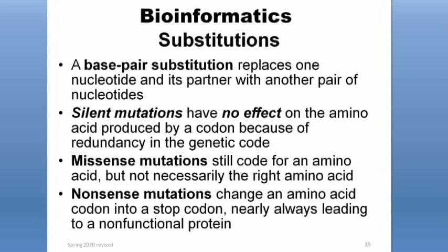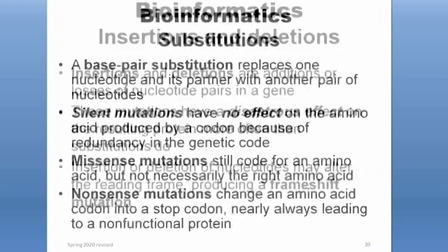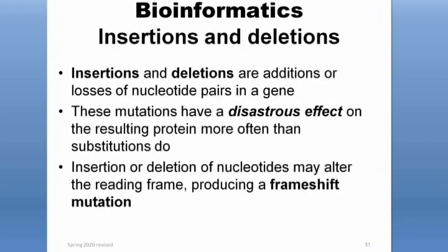In summary, a base pair substitution replaces one nucleotide and its partner with another pair. A silent mutation has no effect on the amino acid produced. A missense mutation still codes for an amino acid but not the correct one. A nonsense mutation creates a premature stop. Insertions or deletions can have a disastrous effect on the protein by causing a frameshift.